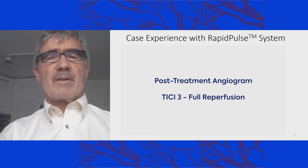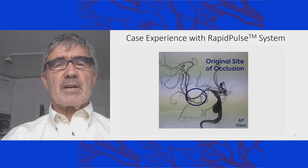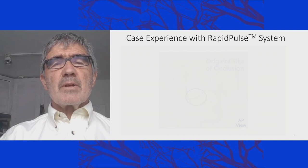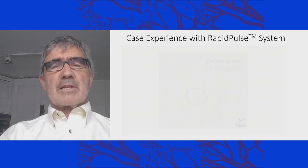After removing the aspiration catheter, the post-aspiration angiogram shows a small spasm due to the large long sheath, but you can see a beautiful image of the vessels — a clean result after the aspiration.